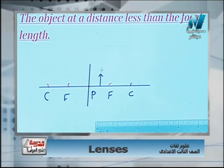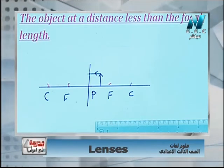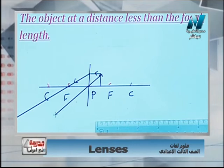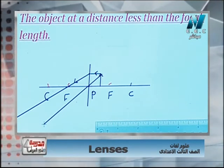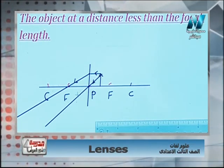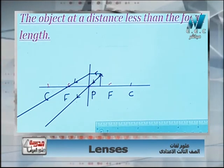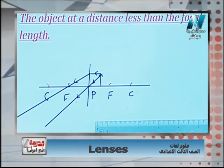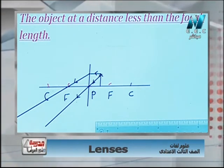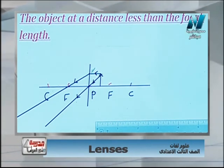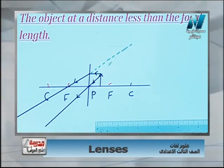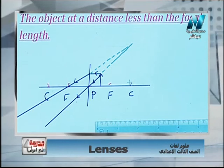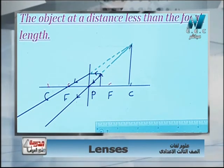Using rule two, the light ray parallel to the principal axis refracts through the focus. The other ray passes through the optical center without refraction. The refracted rays do not intersect, so we use the ruler to draw extensions of each refracted light ray. The point of intersection of those extensions gives the image position.